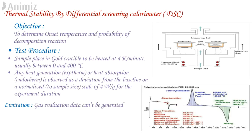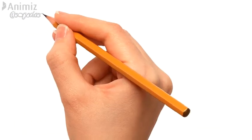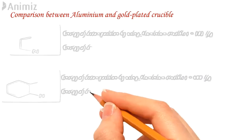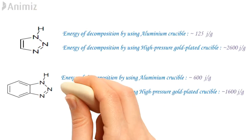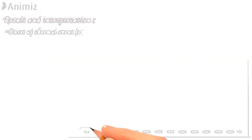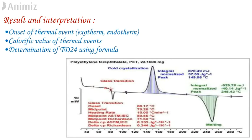When a compound undergoes decomposition, gases can be generated and will escape from the aluminum crucible. The escaping gases can mask the exothermic activity and will not indicate the actual severity of the decomposition. The table shows the comparison between aluminum and gold-plated crucibles. From the table, we can say that gold-plated crucibles give the correct result. From the DSC, we can get the following information: onset of thermal event, i.e., exotherm or endotherm, calorific value of thermal event, and determination of TD24 using a formula. For better understanding, we can consider a graph.